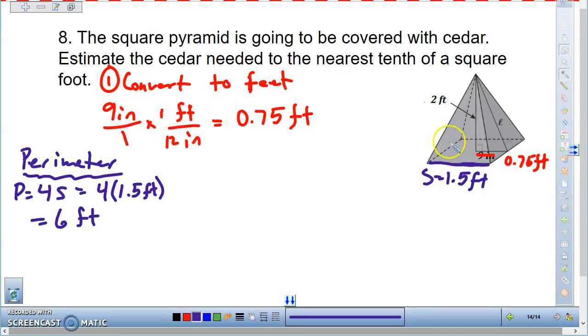So I have perimeter. The other thing that I need is slant height. I need to find slant height. And slant height right here is represented as L, and as you can see, it is part of a right triangle.